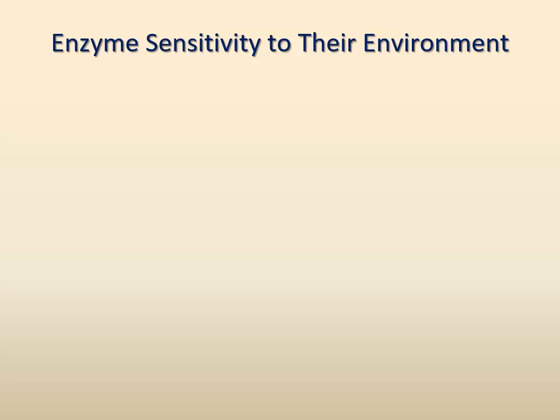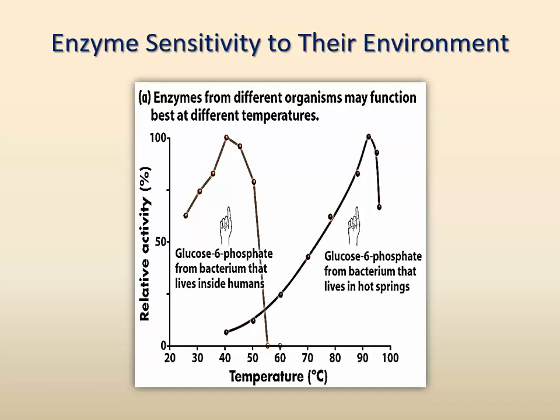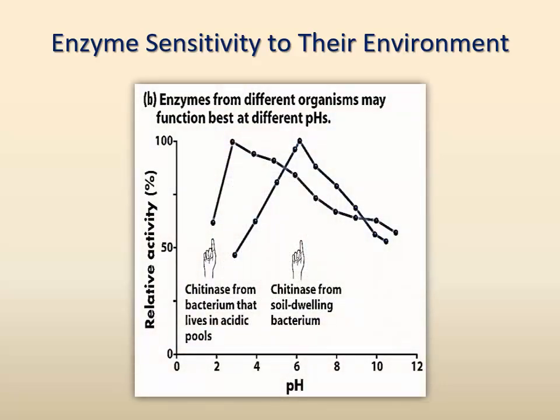The rate of enzymatic reaction is also influenced by environmental factors. Since enzymes are protein in nature, their configuration and therefore their function is affected by changes in temperature. Depending on their peptide structure, some enzymes work best at 37 degrees Celsius, while others require a much higher temperature to work properly. Another factor that influences enzyme activity is the pH. Changes in pH cause changes in the shape of enzymes and therefore cause changes in their catalytic functions.